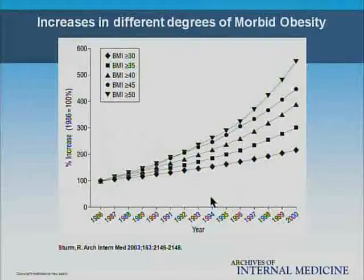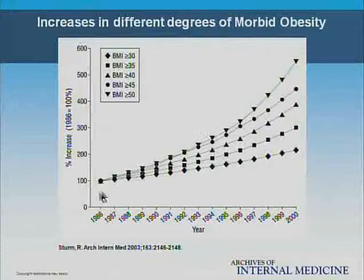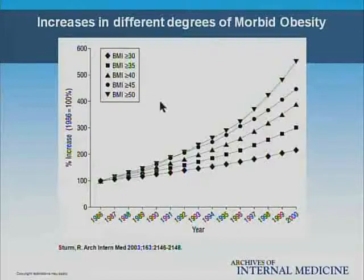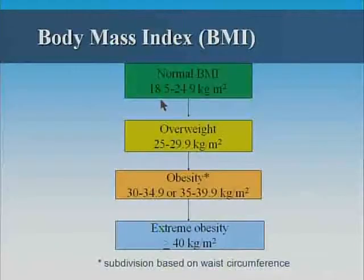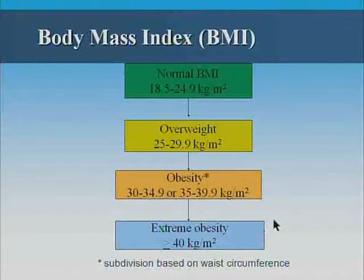What's even more of a problem for us in the ICU is that the percentage of patients in the super obese category — BMI over 45 or 50 — is growing even faster, with an increase from 1986 to 2000 of about 550% in the BMI greater than 50 category. When we're talking about obesity, most people consider anybody over a BMI of 35 as obese, and morbid obesity generally refers to BMIs over 40, which is the cutoff for bariatric surgery in the United States unless they have comorbid conditions.